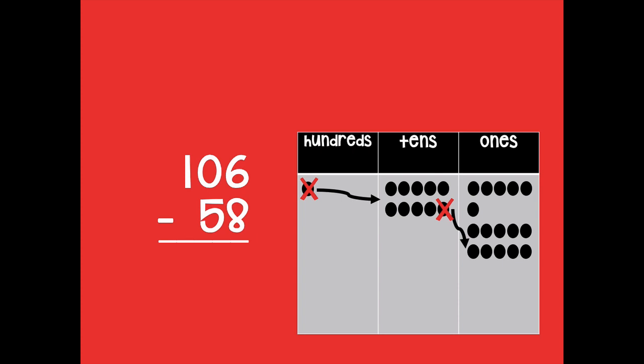Because 9 tens is 90 and 10 ones is 10, so 90 plus 10 equals that hundred that we just unbundled. So now we're able to subtract. Let's model what we did in our vertical form.